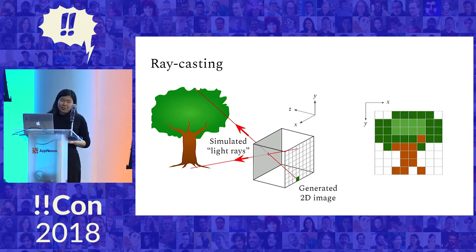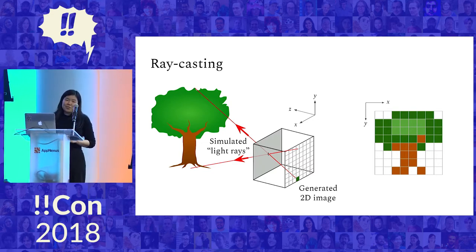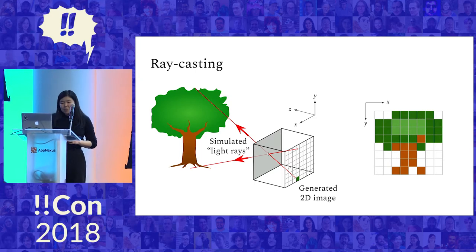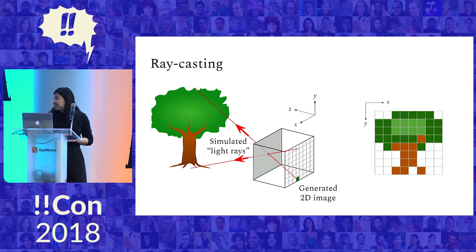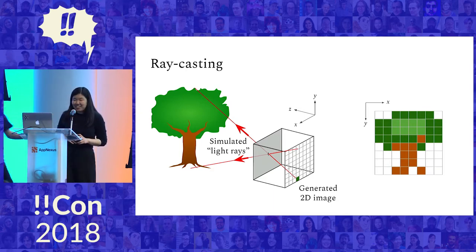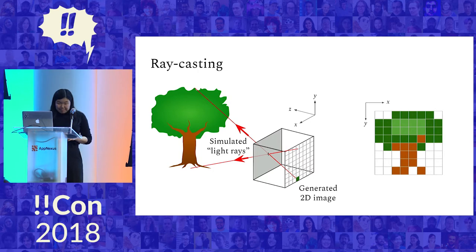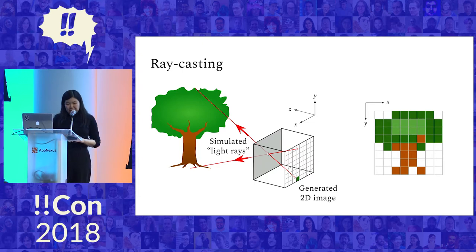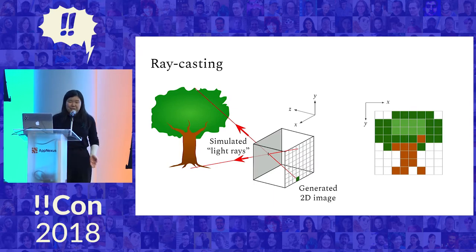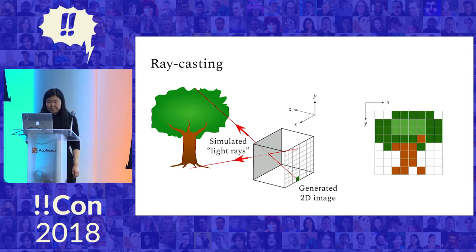Raycasting is an algorithm in computer graphics that simulates the same process. If you want to generate a 2D image, you can use the same geometrical setup. You can basically simulate the light rays that go from your simulated pinhole camera to the 3D object — this is what you do if you have a tree or something in a video game and you want to render a particular two-dimensional view of it. That's how you get this pixel array of colors.